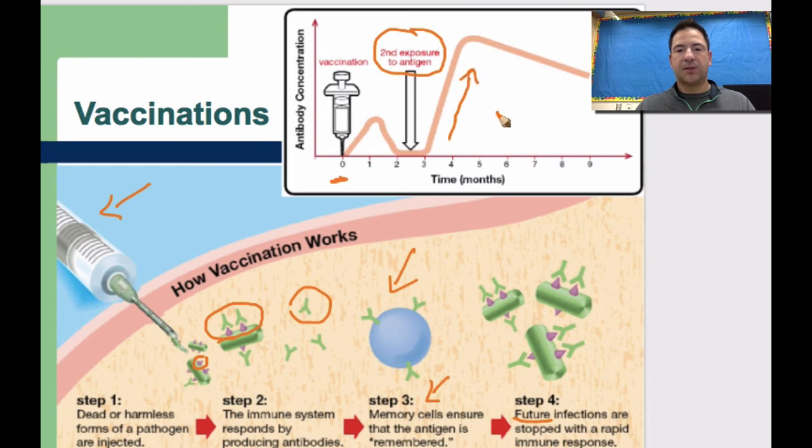So these are antibodies being produced. Remember those little Y-shaped structures. Tons of those are being produced and it's slowing the pathogen. And the immune response in that whole video before is now initiated in the macrophage engulfs. The helper T cells signal the B cells and killer T cells and it goes through the whole process right to the suppressor T cells or regulatory T cells and shuts the immune response down.